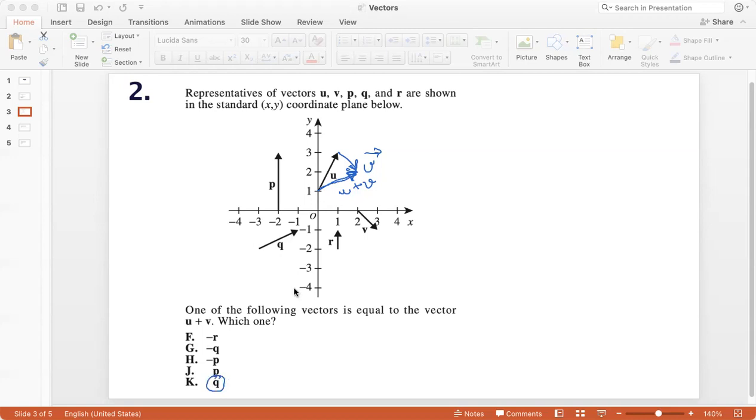What about negative vector r? This is vector r. So negative vector r will simply be the same measure, but opposite direction, right? And that is no similarity with vector u plus v. So this is out. Negative vector q, same measure as q, but opposite direction. Again, that's not correct because we see that u plus v is pointing upward. So it's q.